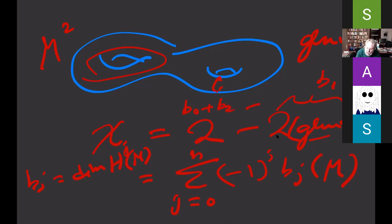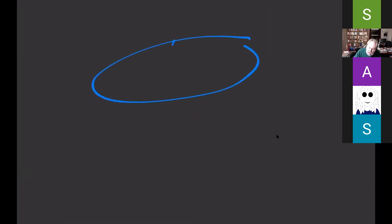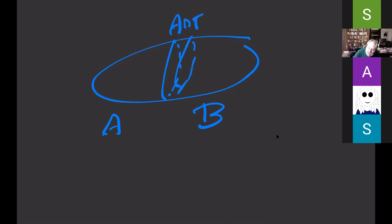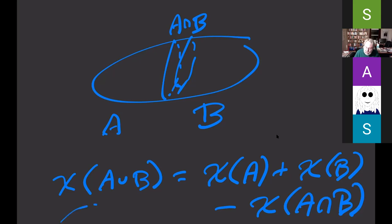Perhaps the most fascinating aspect of the Euler characteristic is a property it has for rather general compact topological spaces. If a space X is written as the union of two compact subsets A and B with overlap A ∩ B, then the Euler characteristic satisfies χ(A ∪ B) = χ(A) + χ(B) − χ(A ∩ B). Using de Rham cohomology, one can prove this inclusion-exclusion property.